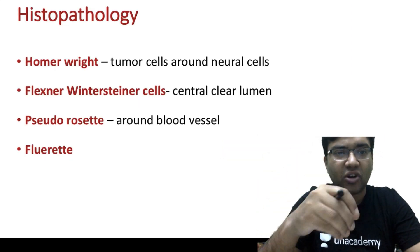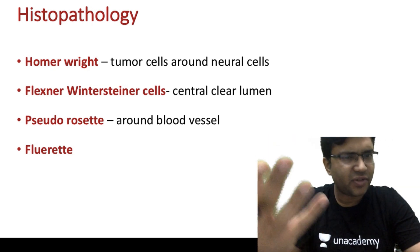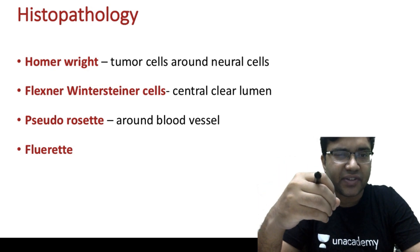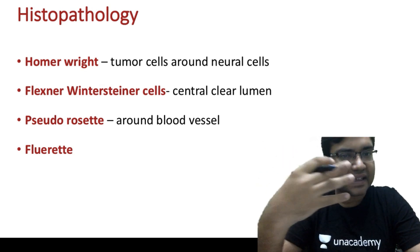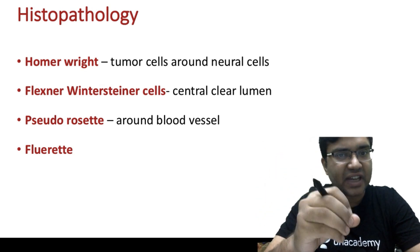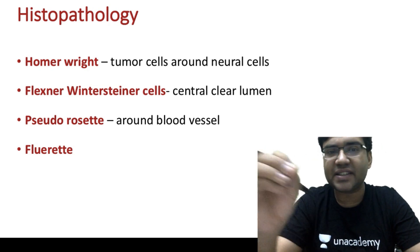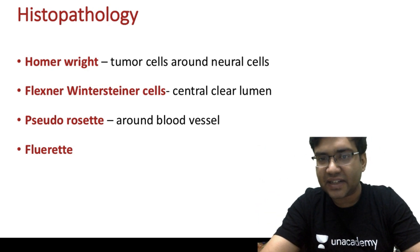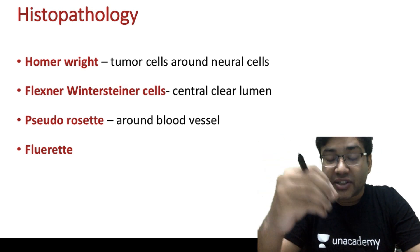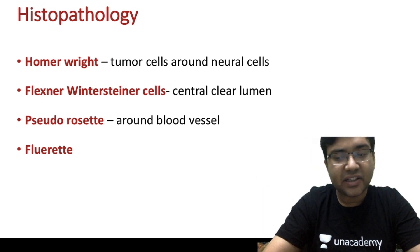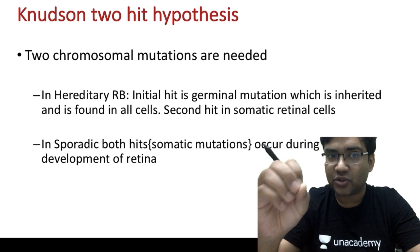On histopathology, various patterns can be seen. Just remember the names: the Homer-Wright rosettes, which have tumor cells around neural cells; the Flexner-Wintersteiner cells, which have a central clear lumen; the pseudo-rosettes, which have cells around blood vessels; and the fleurettes. These are the four patterns seen in retinoblastoma.